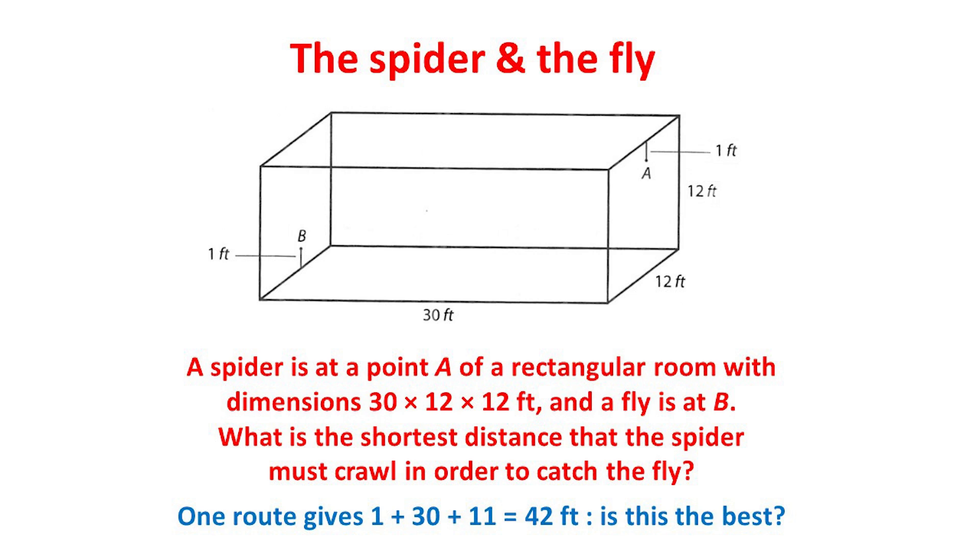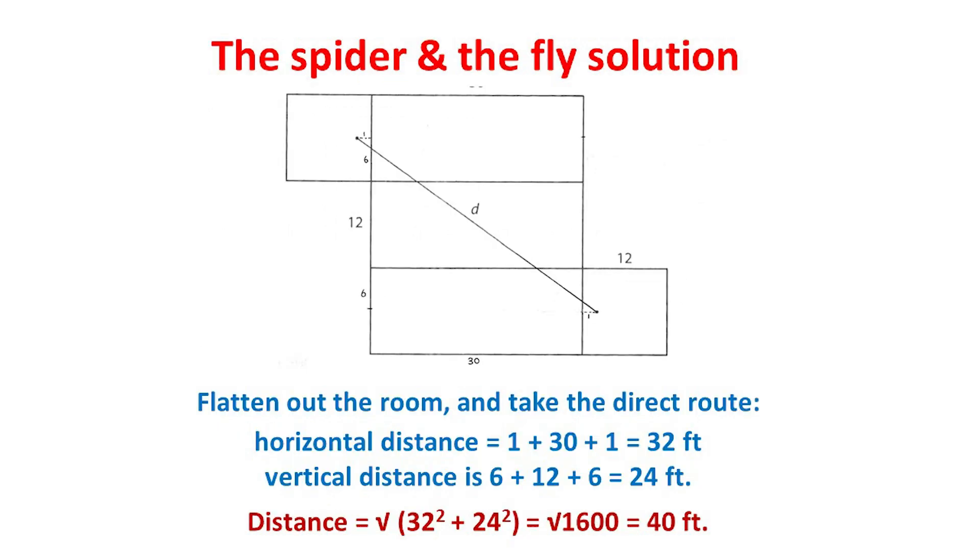But can we do any better? Yes, we can, by flattening the room with the spider taking the direct route shown. Here the total horizontal distance travelled is 32 feet and the vertical distance travelled is 24 feet. By the Pythagorean theorem, these then give the spider's distance to be the square root of 32² + 24², which is the square root of 1600, or 40 feet, and this is the best solution.